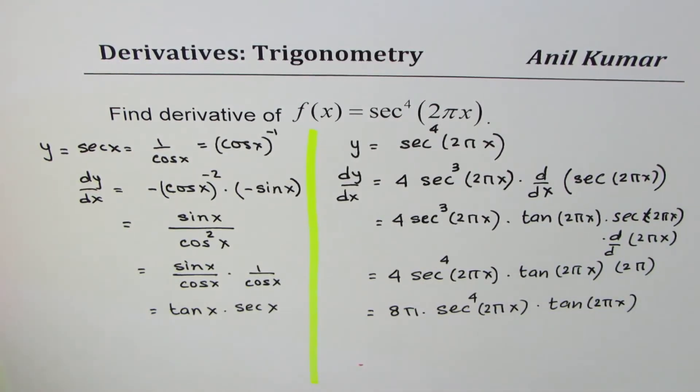That is how you get the derivative of secant to the power of 4, 2 pi x. I'm Anil Kumar and I hope that helps. We have used power rule and chain rule in this particular example. If you like, feel free to subscribe and share my videos. Thank you.